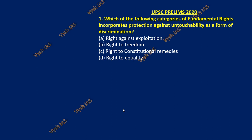First I'll show you three MCQs related to the topics we are going to discuss today. Which of the following categories of fundamental rights incorporates protection against untouchability as a form of discrimination? This is a UPSC prelims 2020 question. Options are: right against exploitation, right to freedom, right to constitutional remedies, right to equality. These are simplistic questions and in Lakshmikanth's first 7-8 chapters itself you will get answers to most prelims questions. Today's chapter also discusses equality, untouchability, and discrimination.